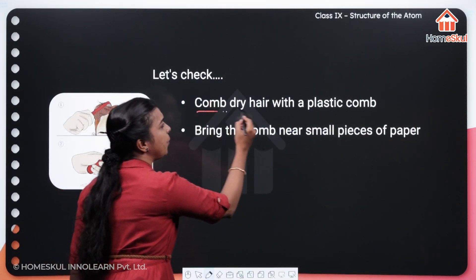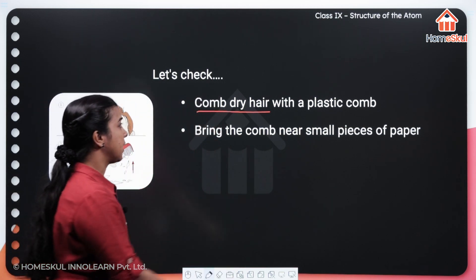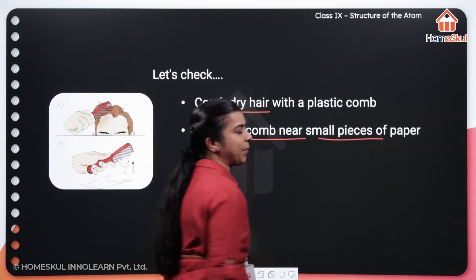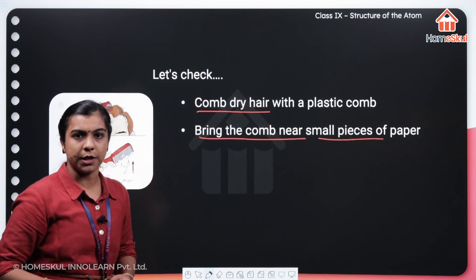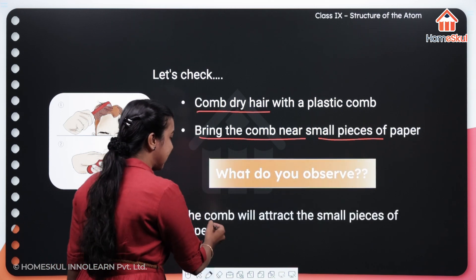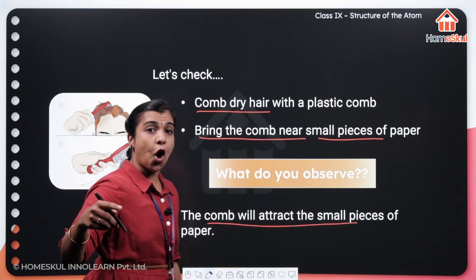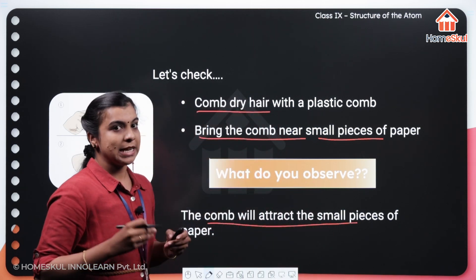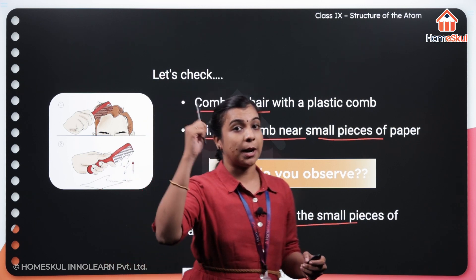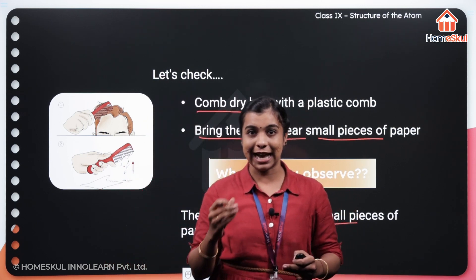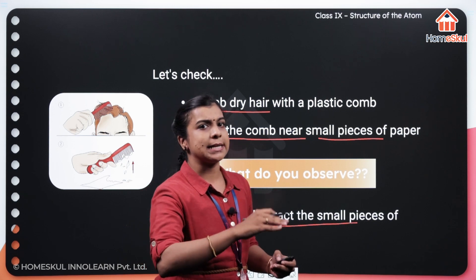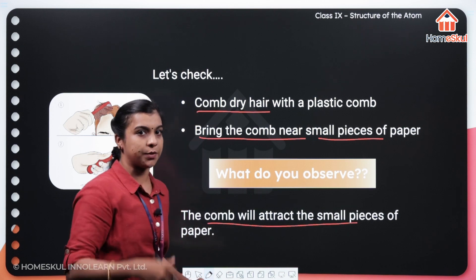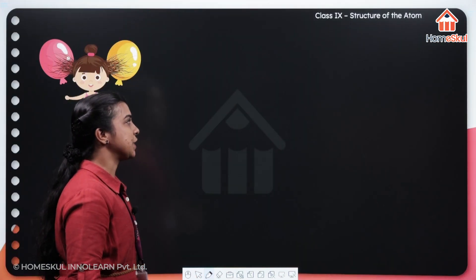Comb your dry hair with a plastic comb and bring the very same comb near some small bits of paper. What will you observe? You can see that the comb will attract the small pieces of paper. Why so? Actually, what did you do here? You took your comb and just rubbed it on your dry hair, then brought that very same comb near some bits of paper, and you found that the comb just attracted all those bits. And why so? Let's check.